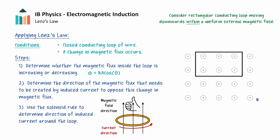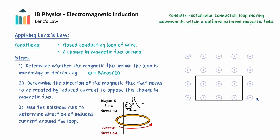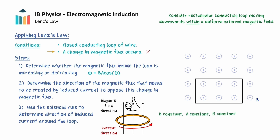When the loop is moving completely within the uniform magnetic field, there will be no change in magnetic flux through the loop. This is because the magnetic field, the area of the loop in the magnetic field, and the angle theta remain constant. So the magnetic flux will be constant throughout this motion. Therefore, an EMF will not be induced, so we cannot apply Lenz's law here.